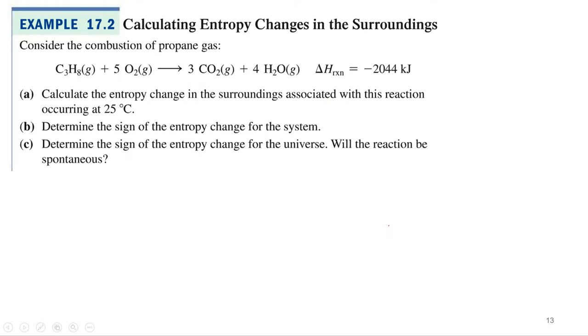All right, so let's use that equation and our knowledge of change in entropy for the system to take a look at example 17.2. But of course, first we have to consider. All right, so consider the combustion of propane gas. C3H8 plus 5 oxygen produces 3 CO2, 4 waters, and has a change in enthalpy of negative 2044 kilojoules. I'll catch up to you. Give me time.